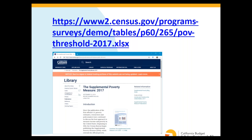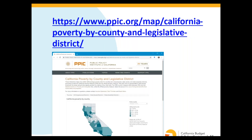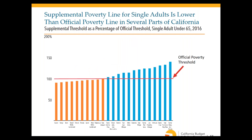Another frequent question: where are supplemental poverty thresholds lower than the official threshold? Looking at supplemental thresholds as a percentage of the official threshold for a single adult under age 65, some areas — generally rural places in California — have supplemental thresholds actually lower than the official poverty threshold. This illustrates a common misperception that the poverty rate is higher in California under the supplemental measure simply because the bar is higher — it's more complicated than that.